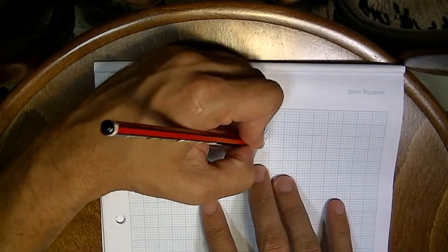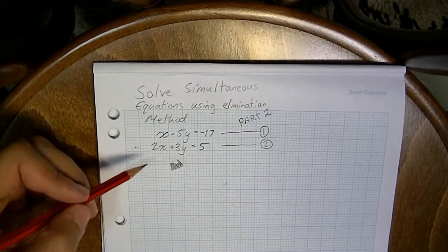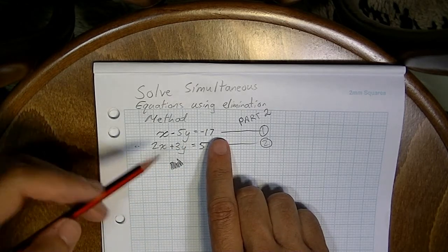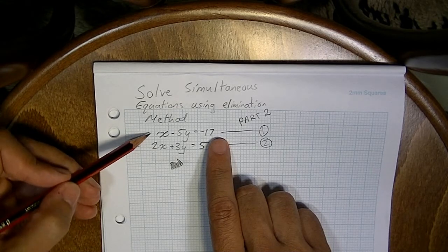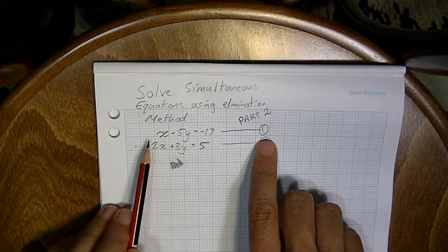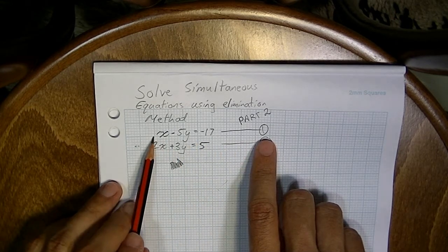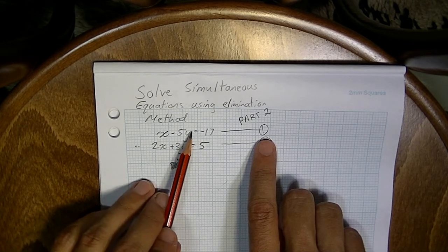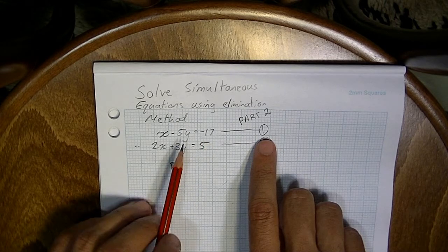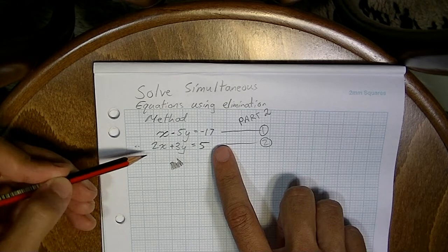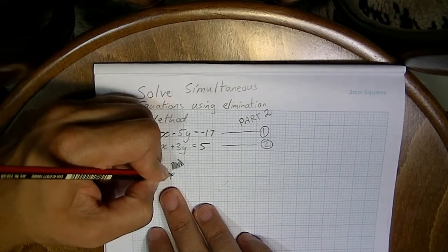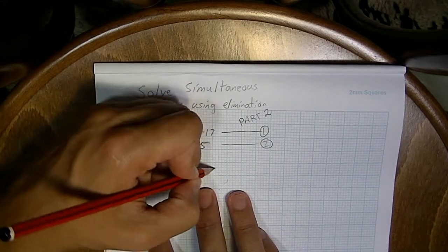Remember to label your equations. What we need to do is multiply an entire equation by something so that in the next step we can add or subtract them to eliminate one variable. If I take the entirety of equation 1 and multiply it by 2, equation 1 would then be 2x minus 10y equals negative 34. I'd have 2x sitting over a 2x, I can subtract them and that'll eliminate the x's. So let's multiply equation 1 by 2.